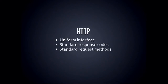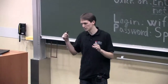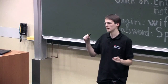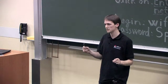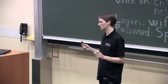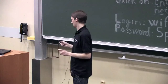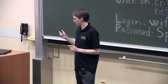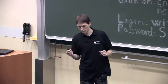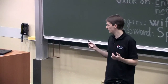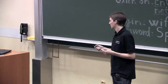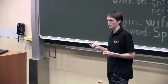HTTP is a protocol that you can implement. With REST, it's important because it provides the uniform interface. REST says there must be a uniform interface but doesn't specify what it looks like — HTTP does. The uniform interface consists of two main fundamental parts: response codes and request methods.